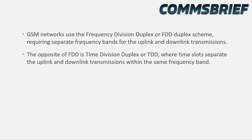GSM networks use the frequency division duplex or FDD duplex scheme that requires separate frequency bands for the uplink and downlink transmissions. The opposite of FDD is time division duplex or TDD, where time slots separate the uplink and downlink transmissions within the same frequency band.